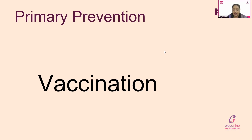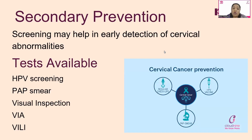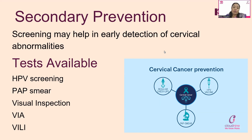The primary prevention rule is: vaccination, vaccination, and vaccination. For secondary prevention — even people who have already received cervical cancer vaccination should not think they don't need screening. That is a complete myth. People who have taken all doses of the vaccination should also be subjected to secondary prevention, because not all HPV strains are covered by the vaccine, and there may be new strains or mutations.